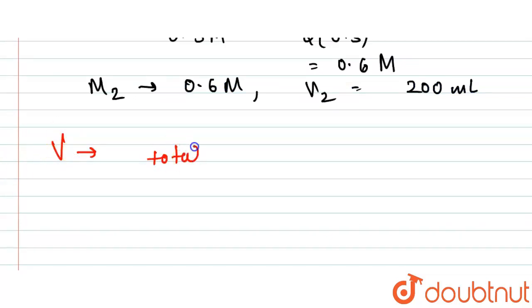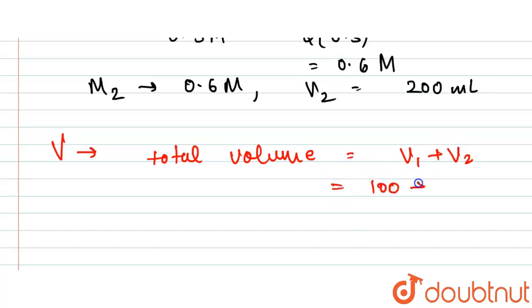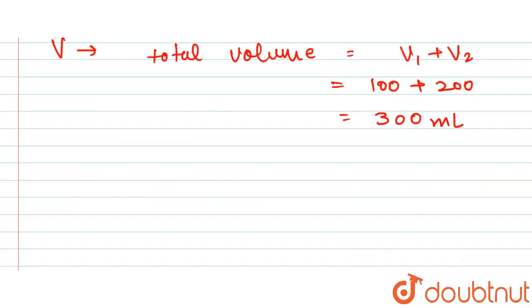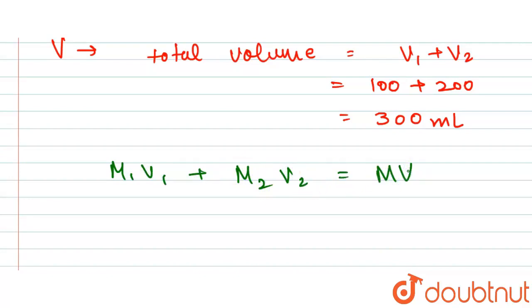The total volume of the resulting solution is V = V₁ + V₂ = 100 + 200 = 300 ml. Now we can substitute all values into the equation M₁V₁ + M₂V₂ = MV.